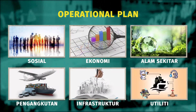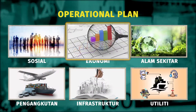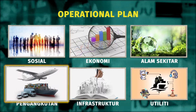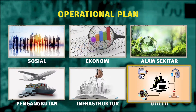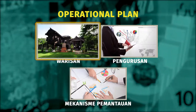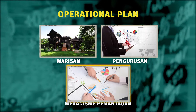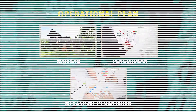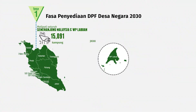DPF Desa Negara berbentuk Operational Plan yang merangkumi aspek sosial, ekonomi, alam sekitar, pengangkutan, infrastruktur, utiliti, warisan, pengurusan dan mekanisme pemantauan. Penyediaan DPF Desa Negara ini terbahagi kepada dua fasa.